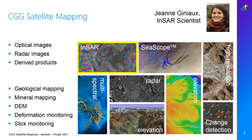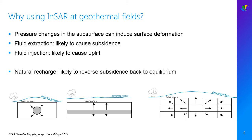Today we focus on InSAR applied to geothermal fields. So why do we use InSAR at geothermal fields? Pressure changes in the subsurface can induce surface deformation. For this reason, fluid extraction is likely to cause subsidence and fluid injection usually causes uplift. Any other fluid flows might also produce a surface deformation signature.